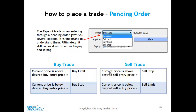When placing a pending order, we have different buy and sell types: buy limit, sell limit, buy stop, and sell stop. This can be confusing for those new to the market, so let's demystify it once and for all. To place a buy trade — speculating that price will go up — we choose the buy limit option if the current price is above the desired buy entry price. Buy stop is the order type we use if the current price is below the desired entry price. That's the difference between the two — it's very important you get this right.